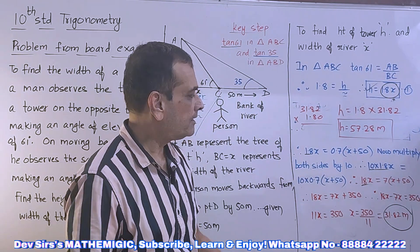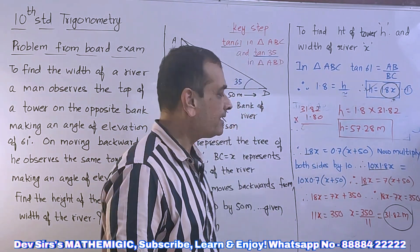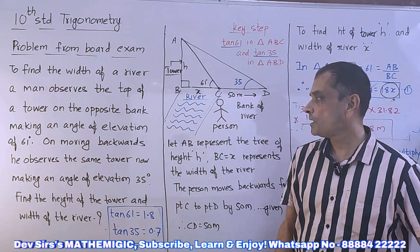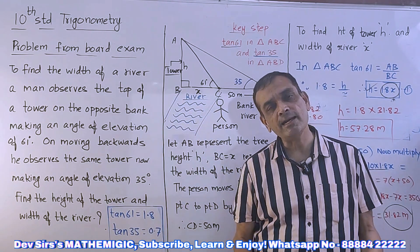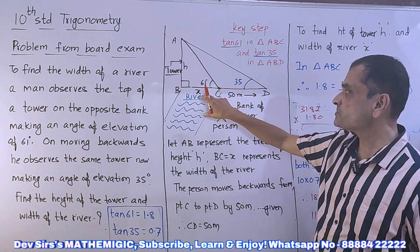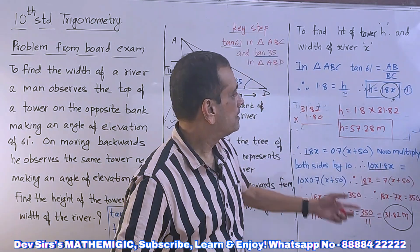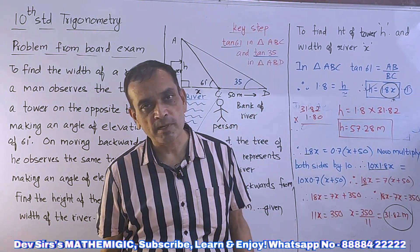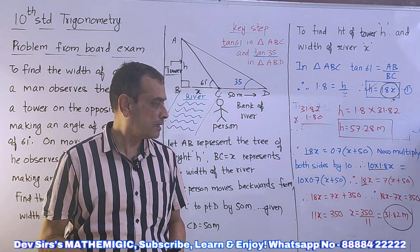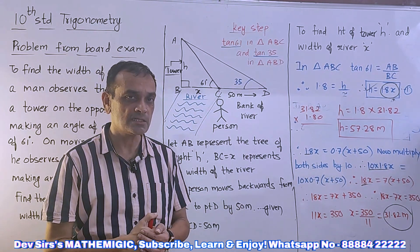So we get two answers: height of the tower is 57.28 meters, and width of the river is 31.82 meters. In both triangles we used tan. BD is x plus 50. To remove h, we separated h in both equations and equated LHS equal to LHS — h ko separate karo, equate karo. Try this sum for practice; it was once or twice asked in the board exam. Hope you enjoyed the video — share it with your friends. Trigonometry is important for 11th and 12th also.